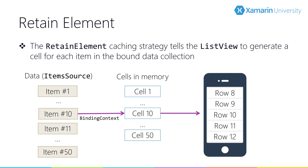RetainElement tells the ListView to create a new cell for every item in your list — it won't cache or reuse cells. This is the default caching strategy. You'd want to use RetainElement when each cell has a large number of bindings, around 20 to 30 or more, or when the cell template changes frequently, or when testing reveals that other caching strategies are slower. This approach tends to use more memory.